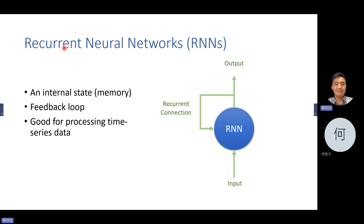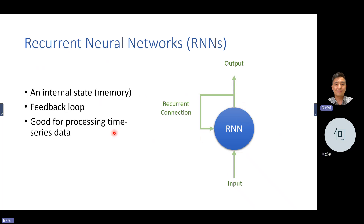Another important type is the recurrent neural network. It has a loopback connection — the output is connected as the input of the next stage. In other words, it has memory: it saves the output state and then uses it as the next input. This is called a recurrent connection.